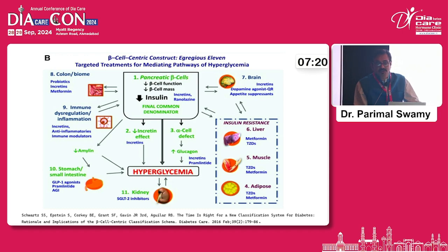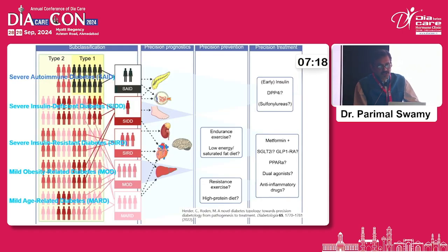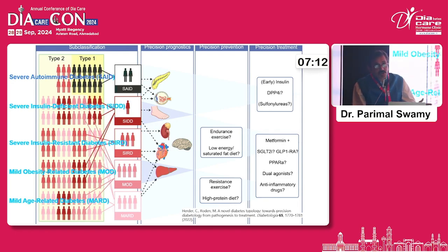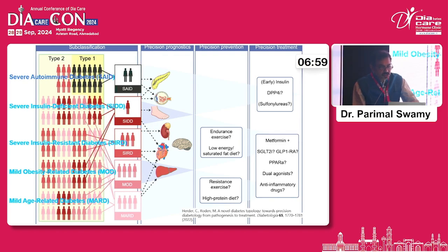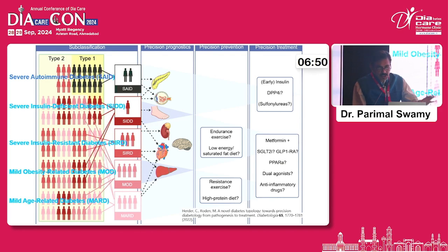To navigate this complex scenario, the older classification of diabetes is no longer sufficient. There are now various subtypes of diabetes which lead to precision treatment of type 2 diabetes. The spectrum ranges from severe autoimmune diabetes, severe insulin deficient diabetes, severe insulin resistant diabetes, to milder forms related to obesity or aging.